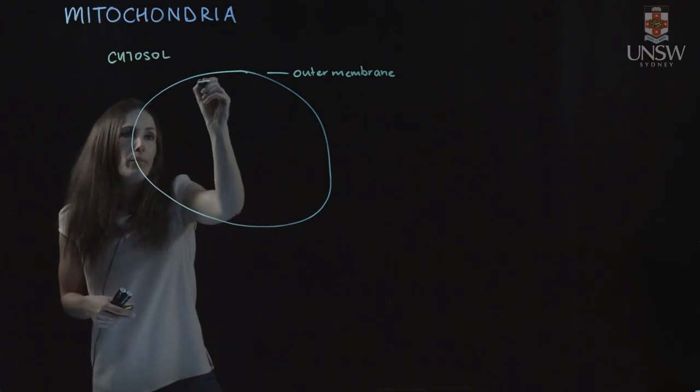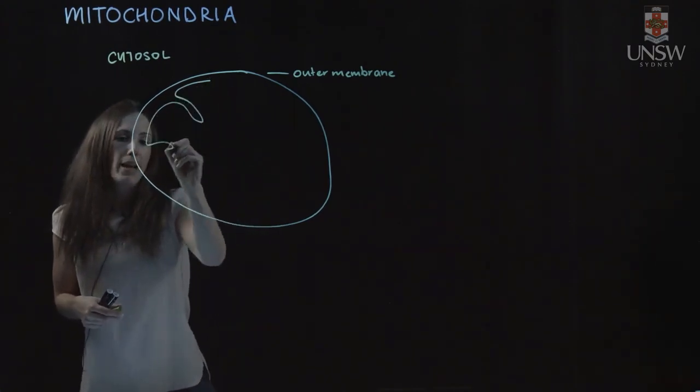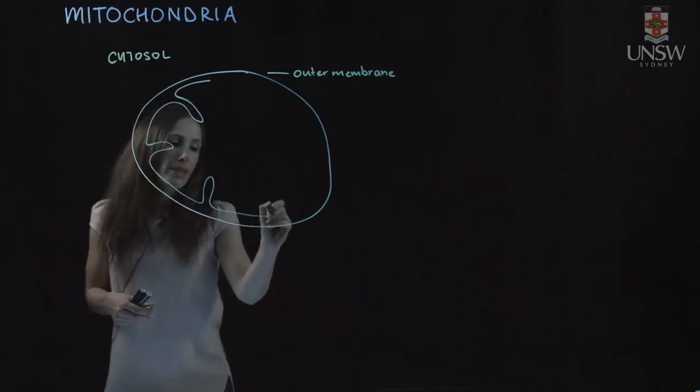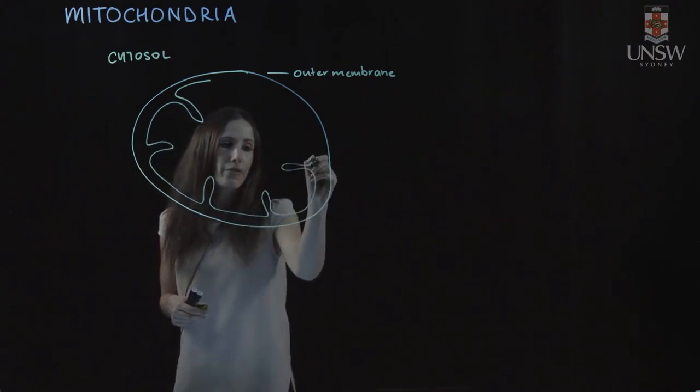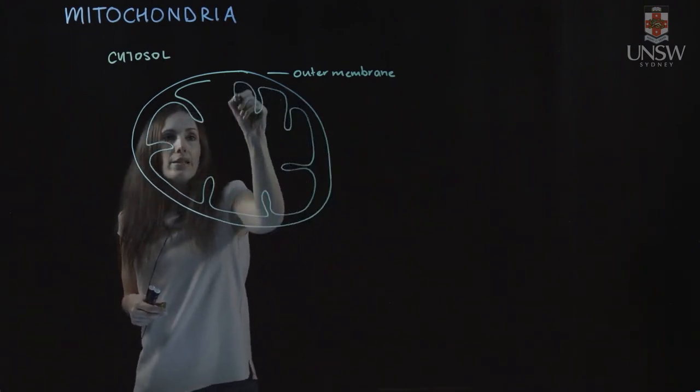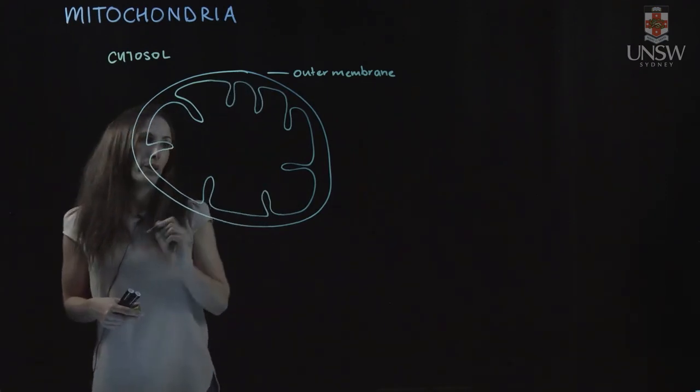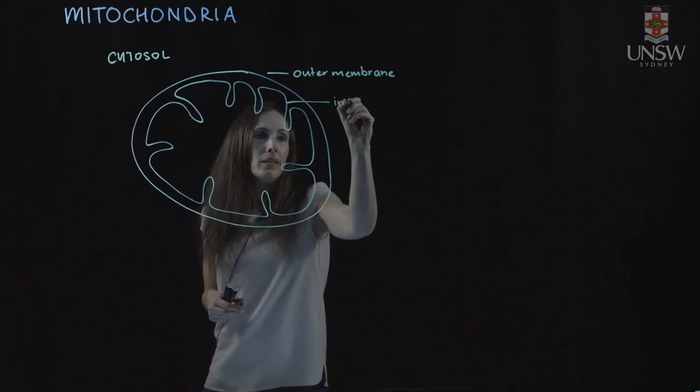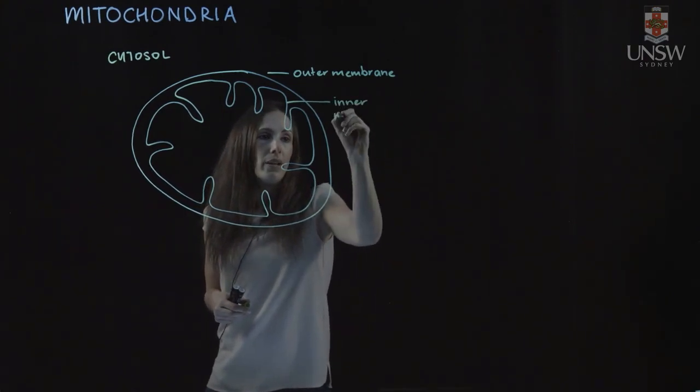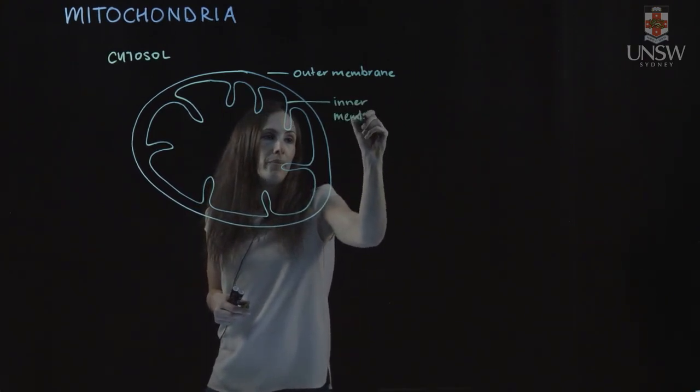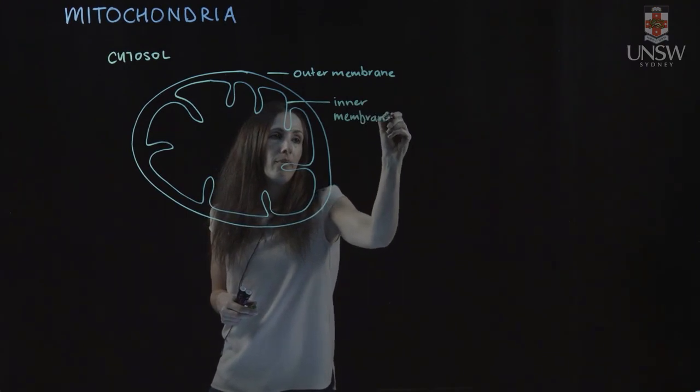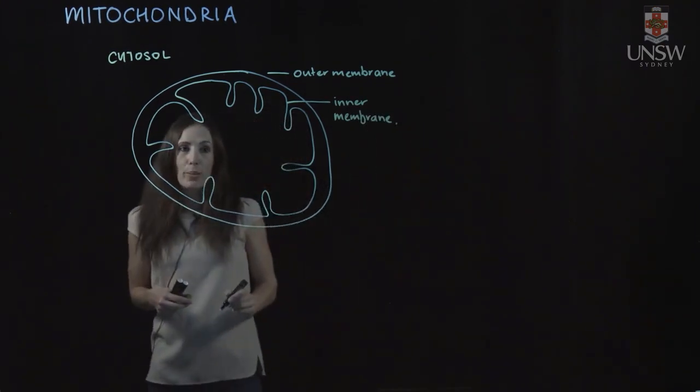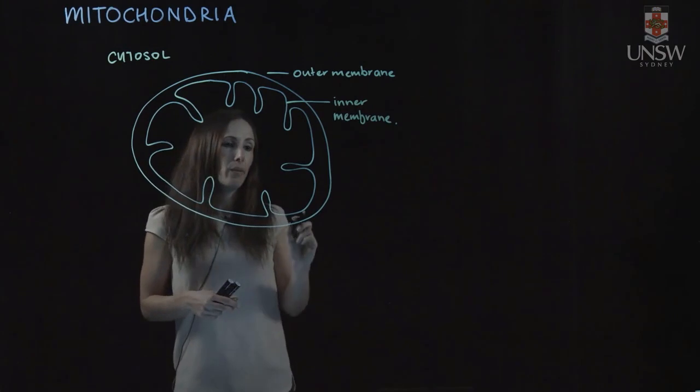They also have an inner membrane, and this inner membrane has a lot of folds in it. These folds are to maximize the surface area of the mitochondria. So here's our inner mitochondrial membrane, and then that space between the two is called our inter-membrane space.